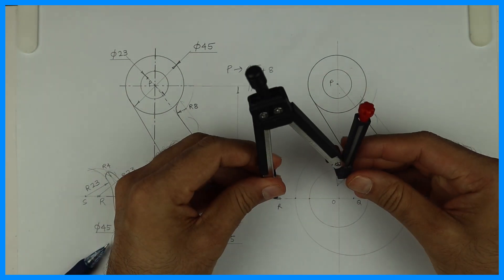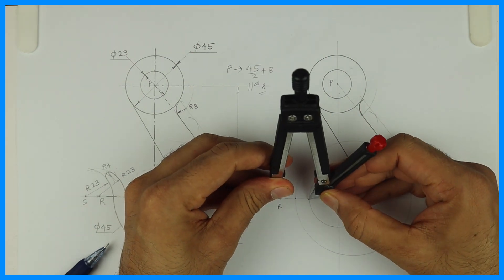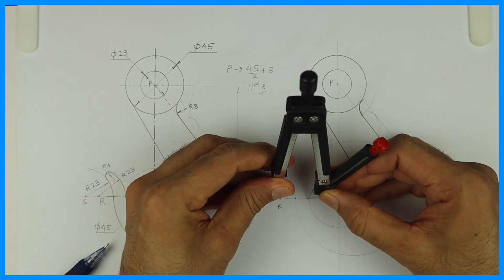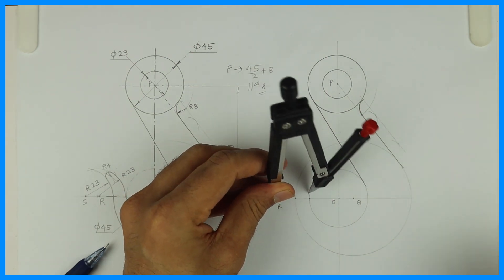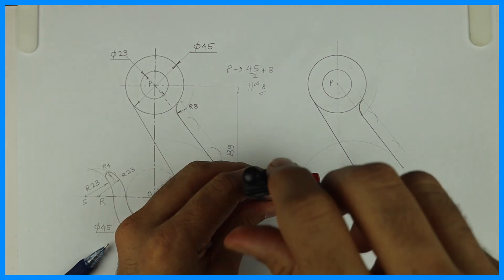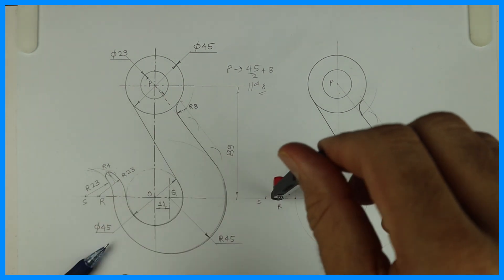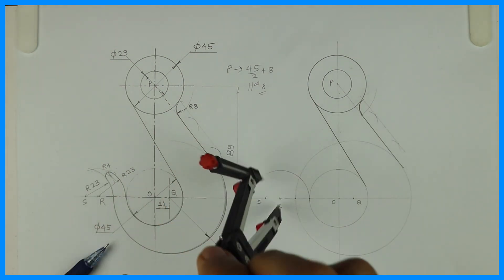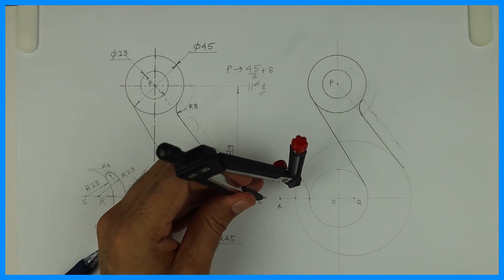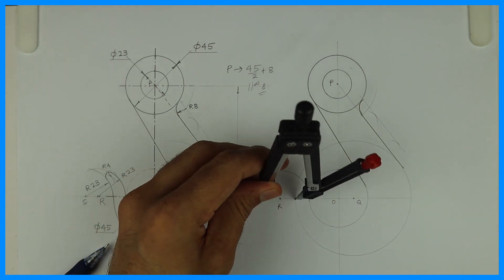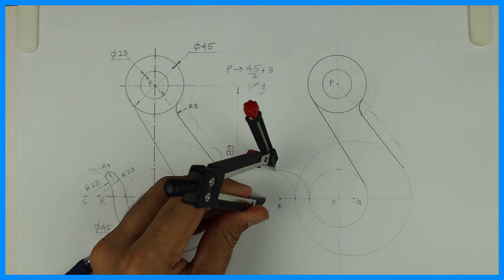From point R you can draw radius 23, and from point S you can draw radius 23.